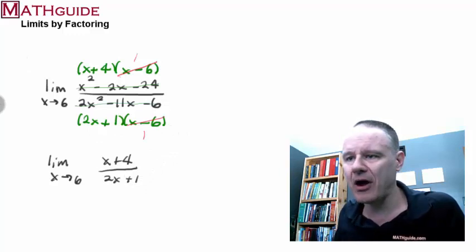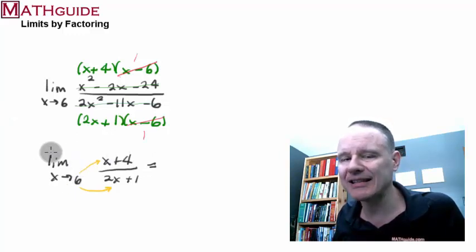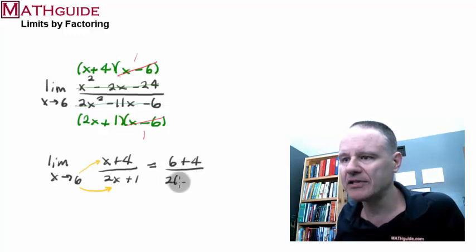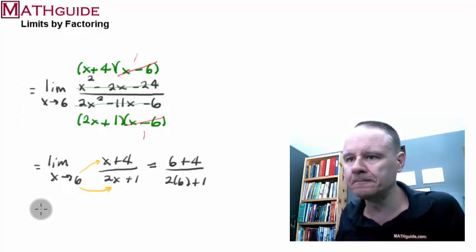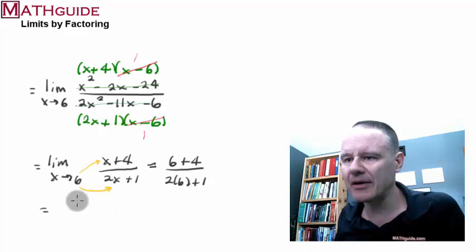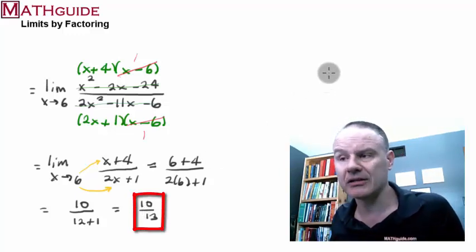Alright. Now just like the last problem, now I'm going to substitute. So wherever there's an x, I'm going to substitute in this value. Now that I'm evaluating, I no longer need to write this limit. I now can just go into the evaluation. So this is going to be 6 plus 4. This is going to be 2 times 6 plus 1. Maybe I should put some equal signs here. And here in the numerator it looks like I'm getting 10. In the denominator I'm getting 12 plus 1. So I'm getting 10 over 13. And there you go. So there's the answer to our second example.